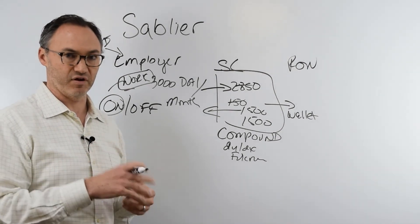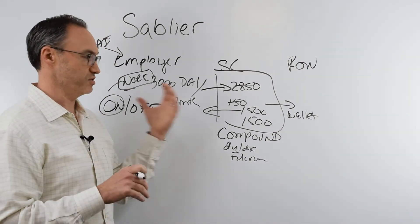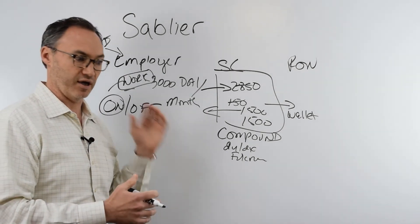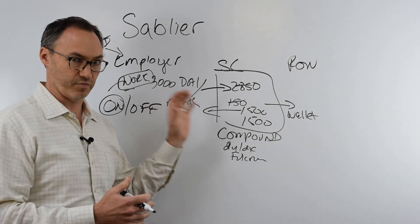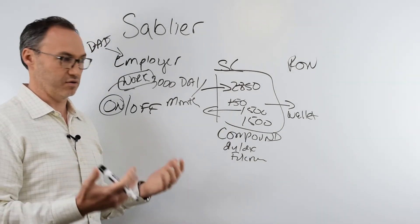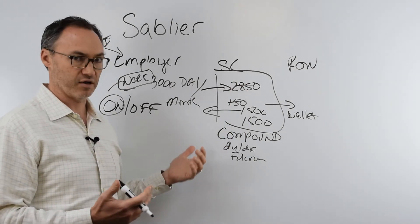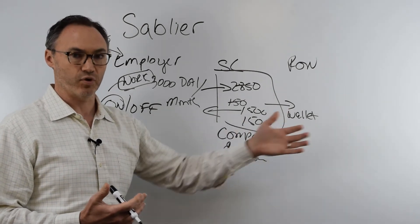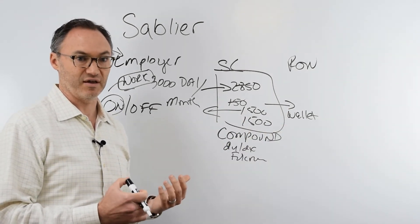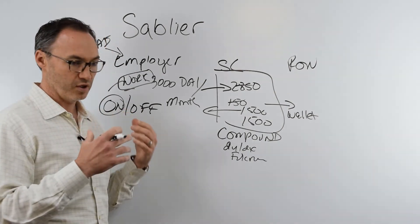I actually had the opportunity to have a phone call with Paul and see this in action. And I'll put the images up where he actually created this smart contract for me one day and the next day he showed me a screenshot that of the 3,000 DAI that it started with, 104 had already been released to me that I could have taken that day if I'd have worked that day.